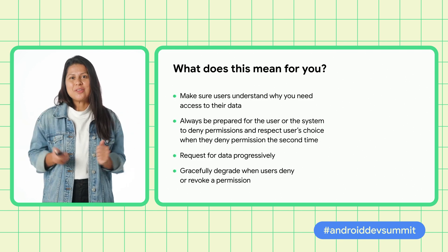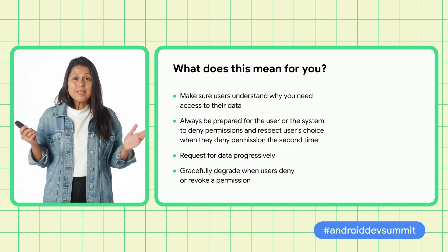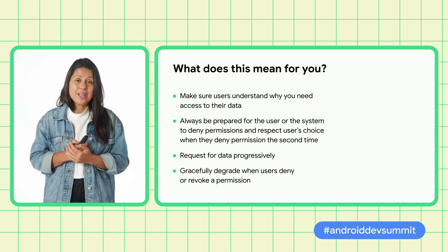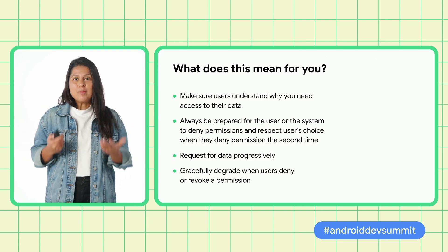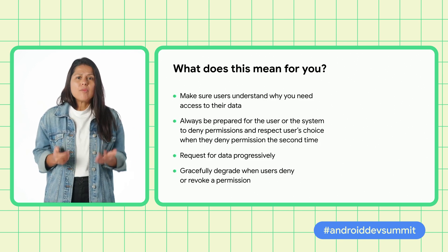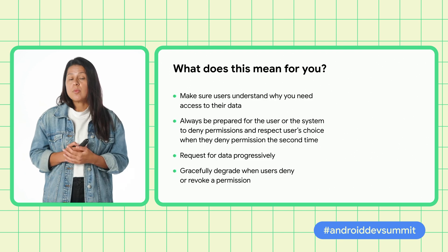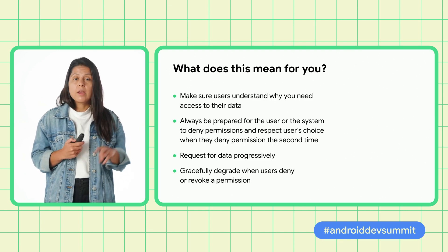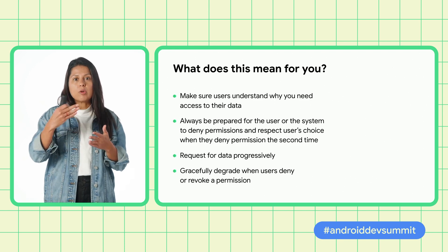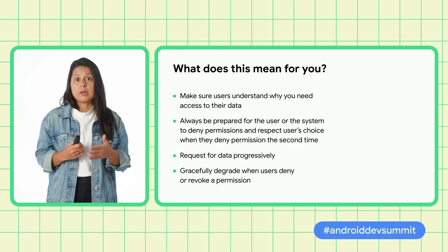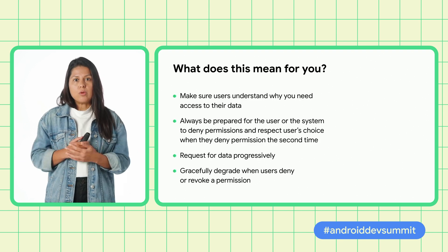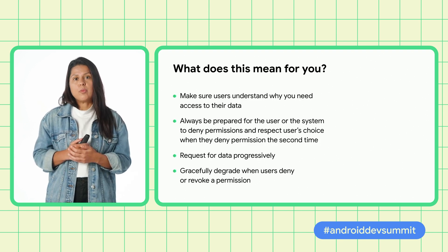Takeaways for developers: Number one, please make sure users understand why your app needs access to their data. Second, always be prepared for the user or the system to deny permissions, and respect users' choice when they deny the permission a second time. Third, don't ask for all permissions at once — gradually request based on the feature a user has invoked. And finally, gracefully degrade when the user denies or revokes a permission.